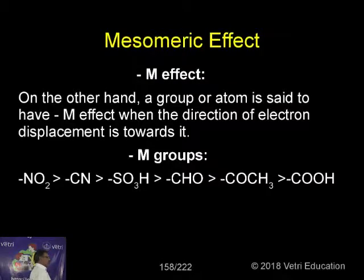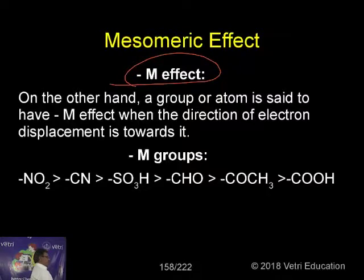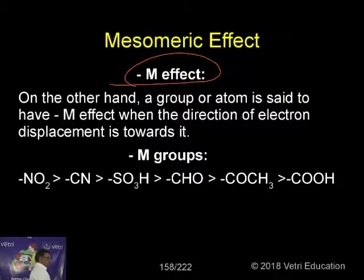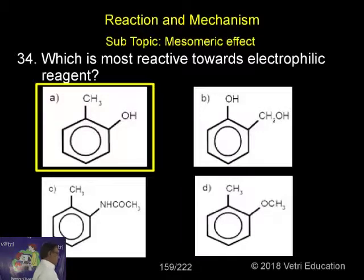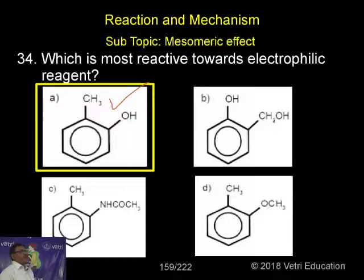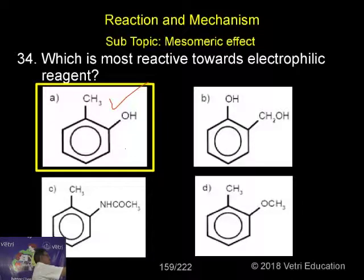On the other hand, a group showing the −M effect — when the direction of electron displacement is from the ring towards the group — causes the ring to have a positive charge, deactivating it. The order for −M groups is: NO2 > CN > SO3H > CHO > COOH. So automatically, the most reactive compound towards the electrophilic reagent is now determined correspondingly.